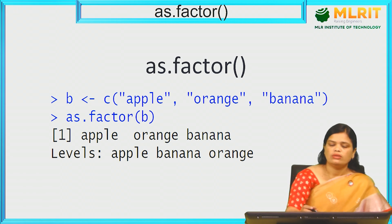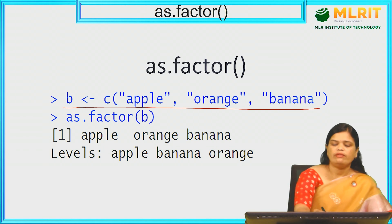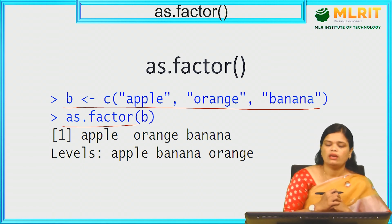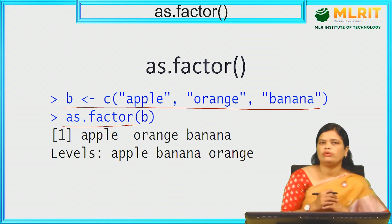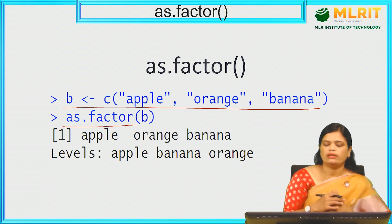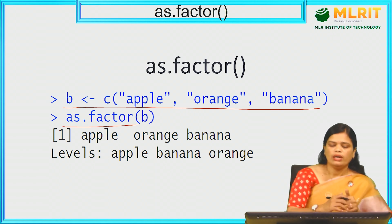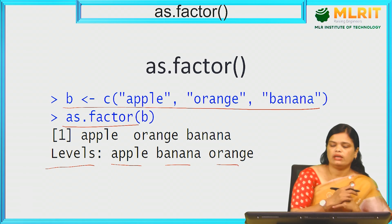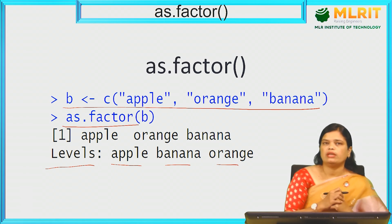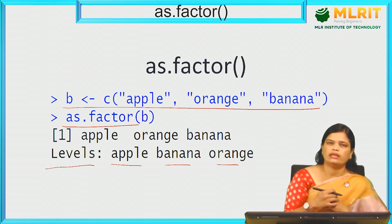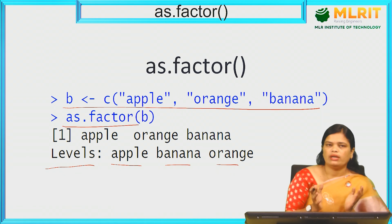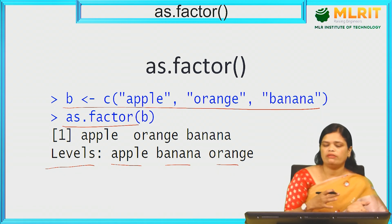as.factor — we have a vector, and by using as.factor we are converting that vector into a factor. The difference between a vector and a factor is that a vector displays the same data as specified, but when you use a factor it converts the data into levels. So apple, banana, and orange become levels. Whenever we have categorical data such as age or gender, we prefer to declare it using a factor — male and female will be displayed as the levels.